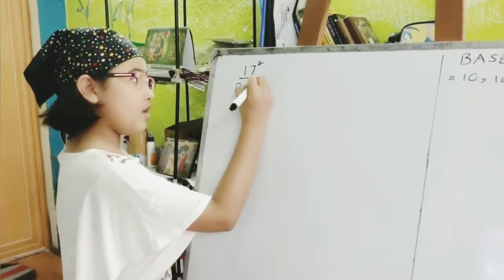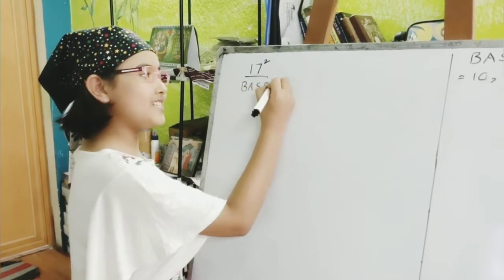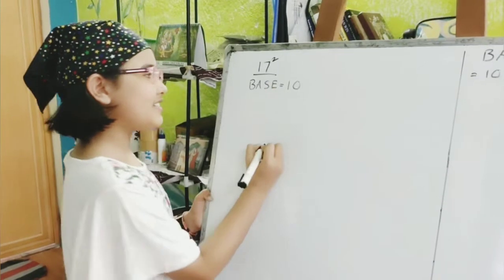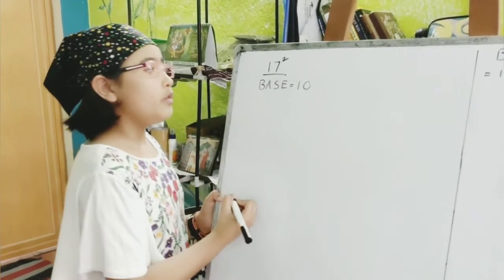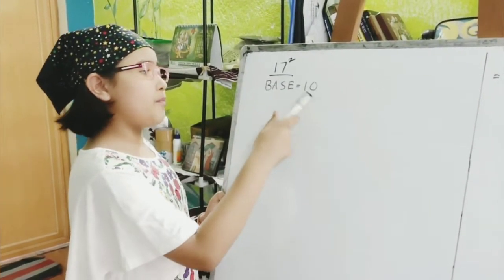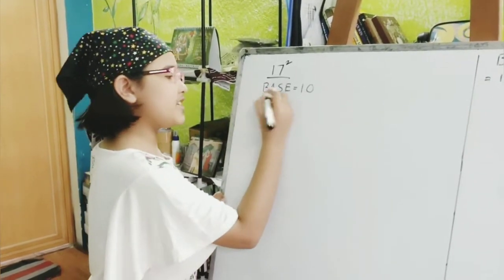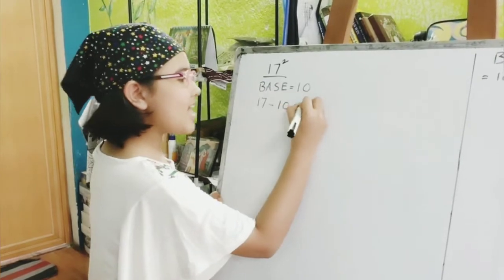The base number is always 10, 100, 1000, etc. Over here, you have to find the base number that is closest to this. Now, tell me, what is the base number of 17? Yes, you are right. That's 10. So, the next step will be to subtract the base number from the number. So, we'll write 17 minus 10. That is 7.